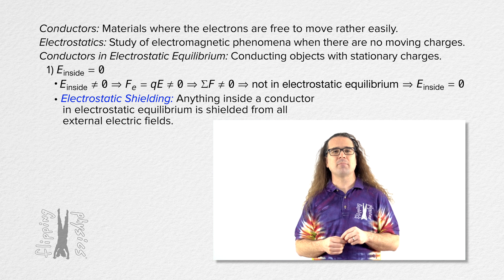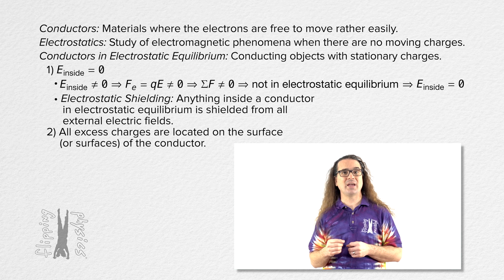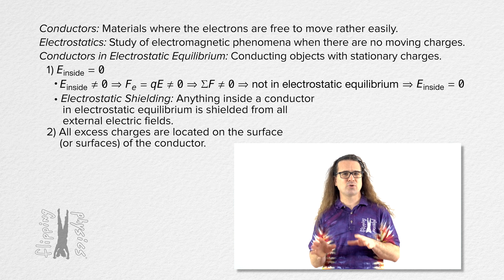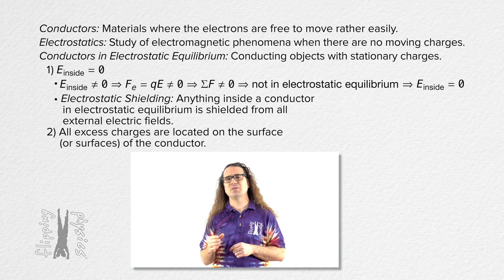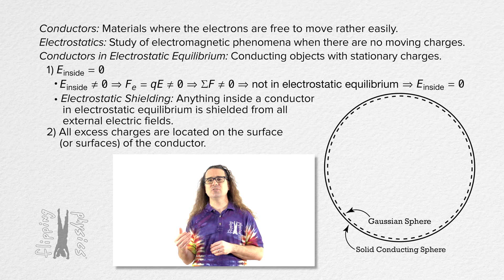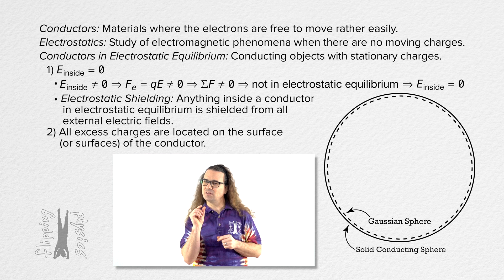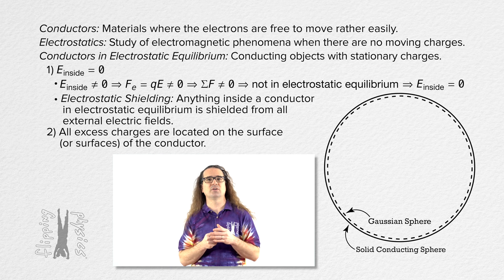The second thing you need to remember about conductors in electrostatic equilibrium is that all excess charges are located on the surface of the conductor. To prove this, let's do an example with a solid conducting sphere. Let's draw a Gaussian surface in the shape of a sphere which is concentric with the solid spherical conductor, but with a radius that is a little bit smaller than the radius of the solid spherical conductor.